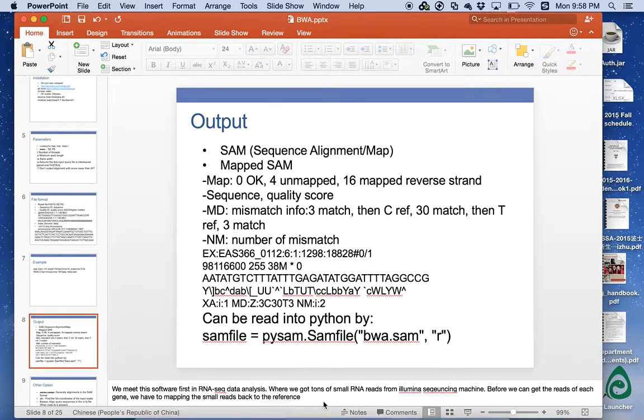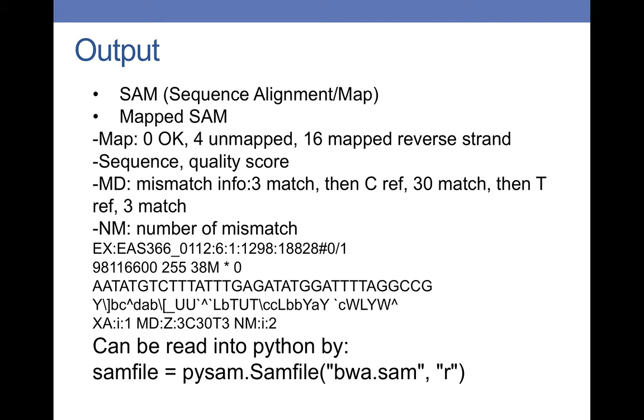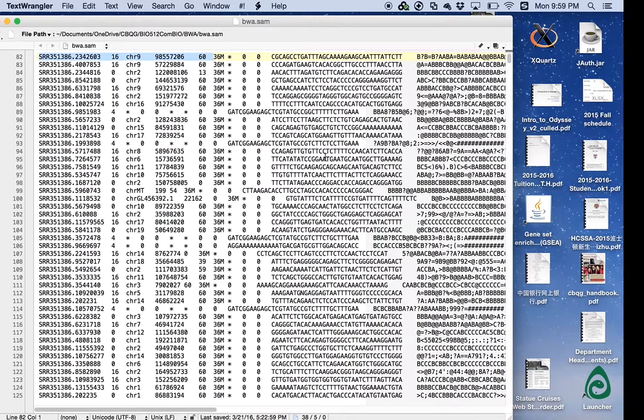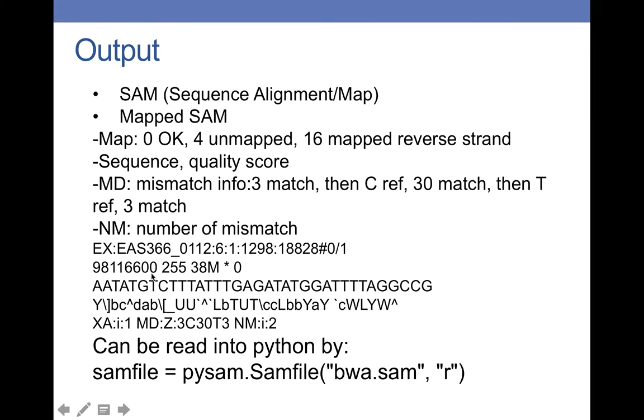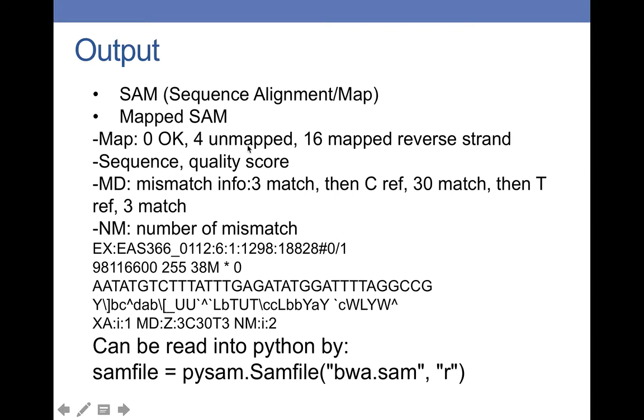After a few times it should run for a long time. So while it's running, let's talk about the format of the output file. The output file is the SAM file format, which stands for Sequence Alignment Map file. Let me show you one example of the SAM file. For each line it is one read. For one read, it contains the index of that read and the map index. 0 means okay.